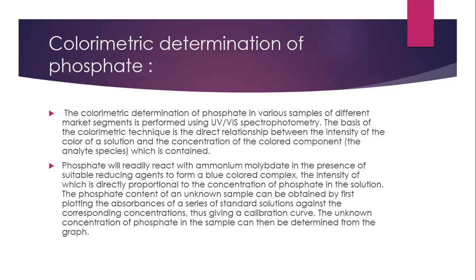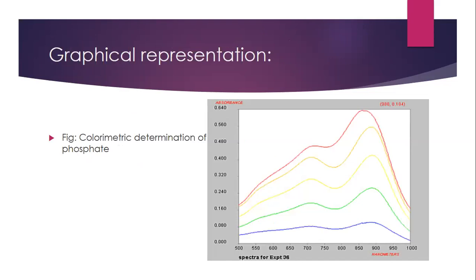The next is colorimetric determination of phosphate, an application in the field of chemistry. The basis of the colorimetric technique is the direct relationship between the density of color of a solution and the concentration of the colored component. A phosphate will readily react with ammonium molybdate in the presence of a suitable reducing agent to form a blue colored complex, the intensity of which is directly proportional to the concentration of phosphate in the solution. The phosphate content of an unknown sample can be obtained by first plotting the absorbance of a series of standard solutions against the corresponding concentration, giving a calibration curve, from which the unknown concentration is determined.